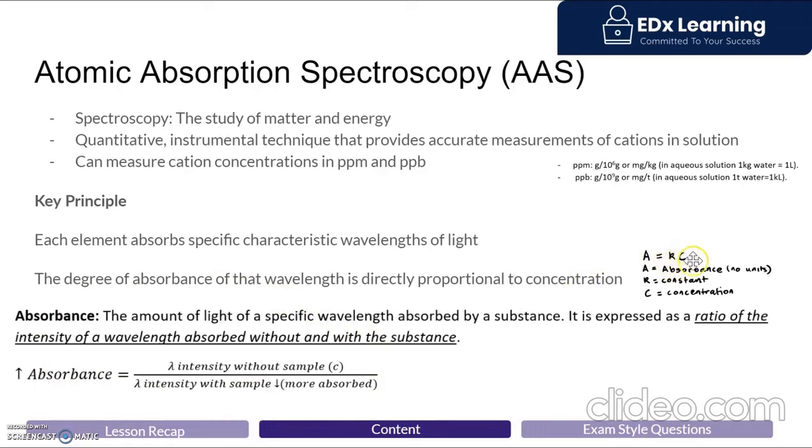Here is a final equation to highlight the relationship between absorbance and concentration. If a sample is concentrated, there's going to be a lower intensity of light when a sample is present, because it's going to absorb it. When the denominator increases with a greater concentration, this overall value, this fraction, will increase, and hence absorbance increases with increasing concentration.